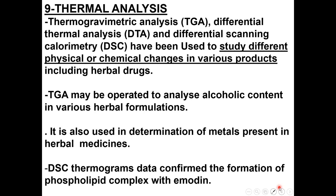Thermal analysis procedures include thermogravimetric analysis, TGA; differential thermal analysis, DTA; and differential scanning calorimetry, DSC. These were used to study different physical and chemical changes in various herbal products. DTA can determine the alcohol content of alcoholic herbal formulations and can be used to determine metals present in herbal medicine. DSC confirmed the formation of phospholipid complex with emodin.